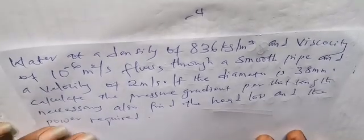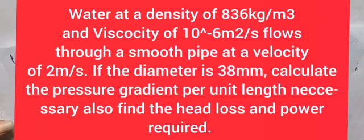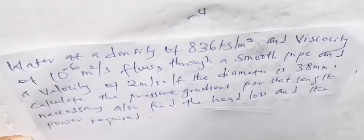Let's consider this question. Water at a density of 836 kilograms per meter cube and viscosity of 10 to the power of minus 6 meters squared per second flows through a smooth pipe at a velocity of 2 meters per second. If the diameter is 38 millimeters, calculate the pressure gradient per unit length, also find the head loss and the power required.